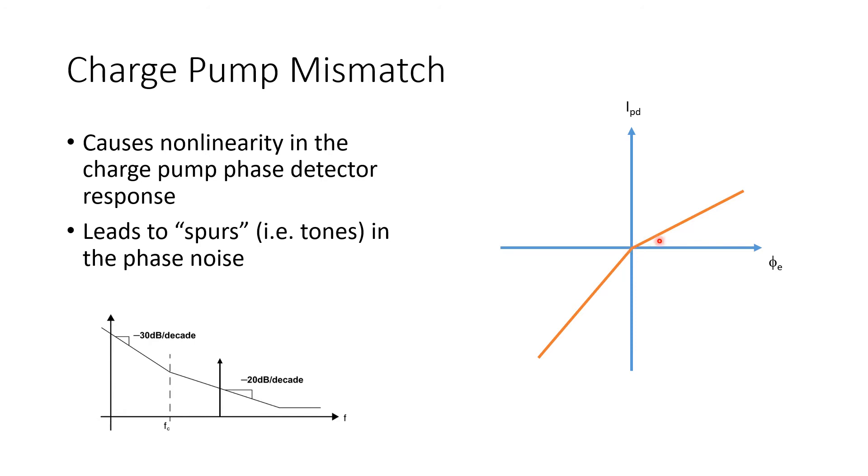So this sort of invalidates the linear analysis of the phase lock loop. And whenever you introduce a nonlinearity like that, it's not surprising that tones may arise. So specifically what you see in the phase noise at the output of the PLL in the presence of such a nonlinearity is the appearance of spurs, that is, tones in the phase noise spectrum, where jitter is concentrated at specific frequencies.